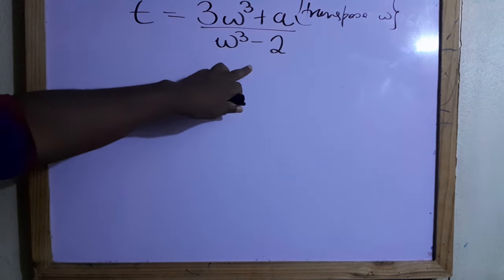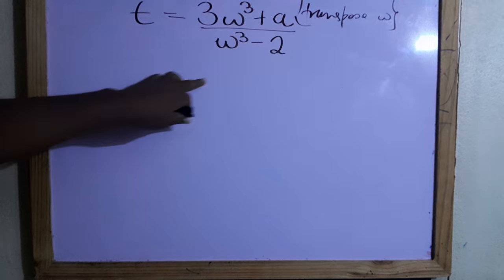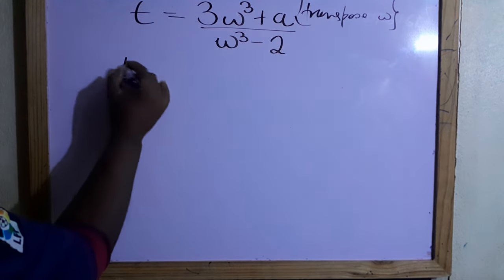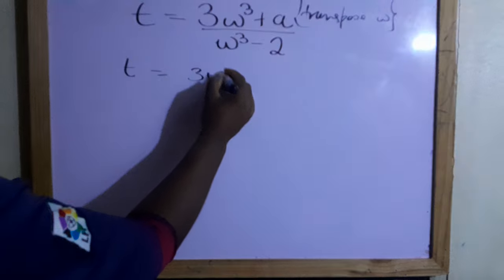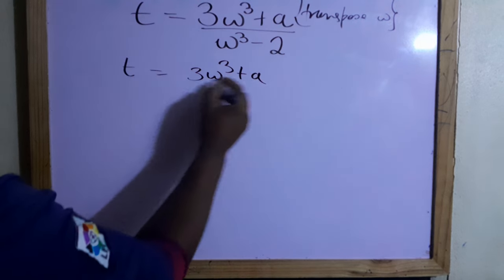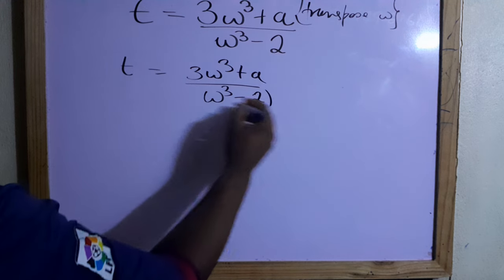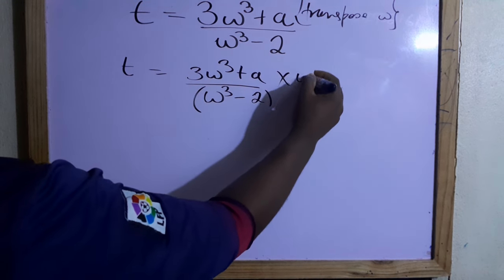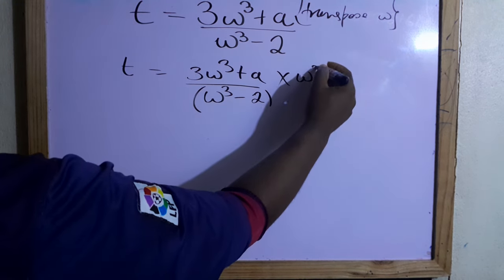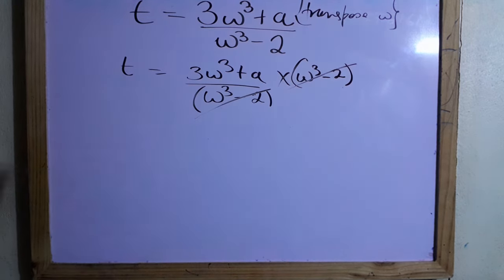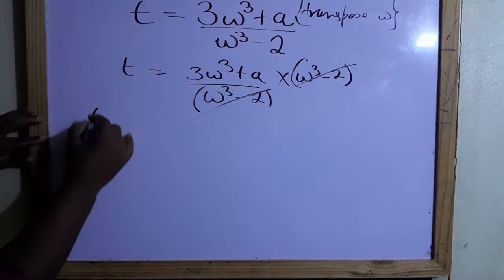The first thing you want to do is get rid of the denominator. We're going to multiply by whatever is in the denominator. In the denominator we have ω³ - 2, so we're going to times by that. This would cancel - what you do to one side you have to do to both sides.